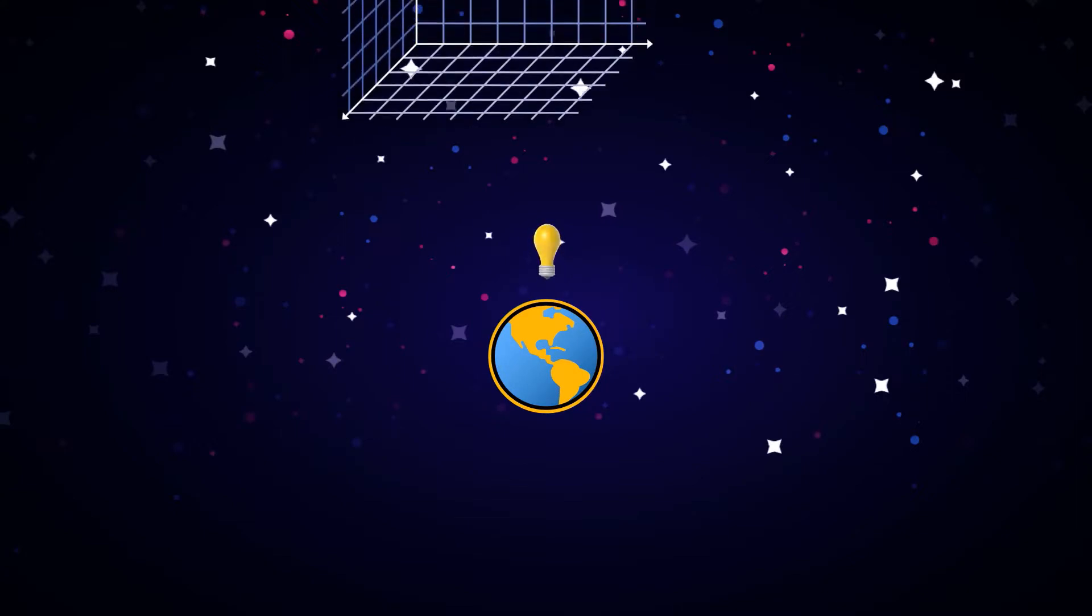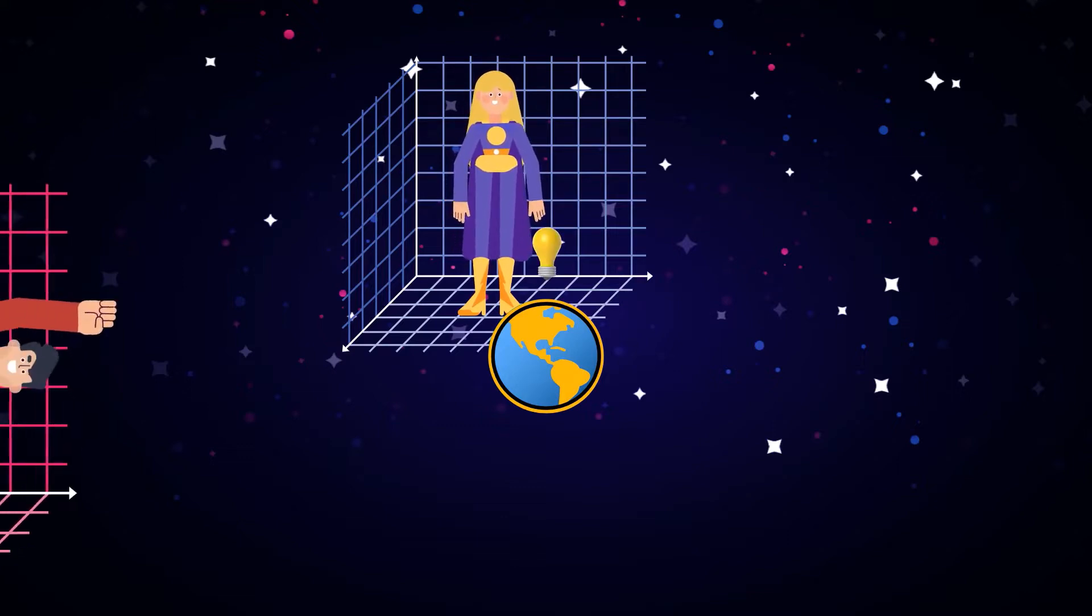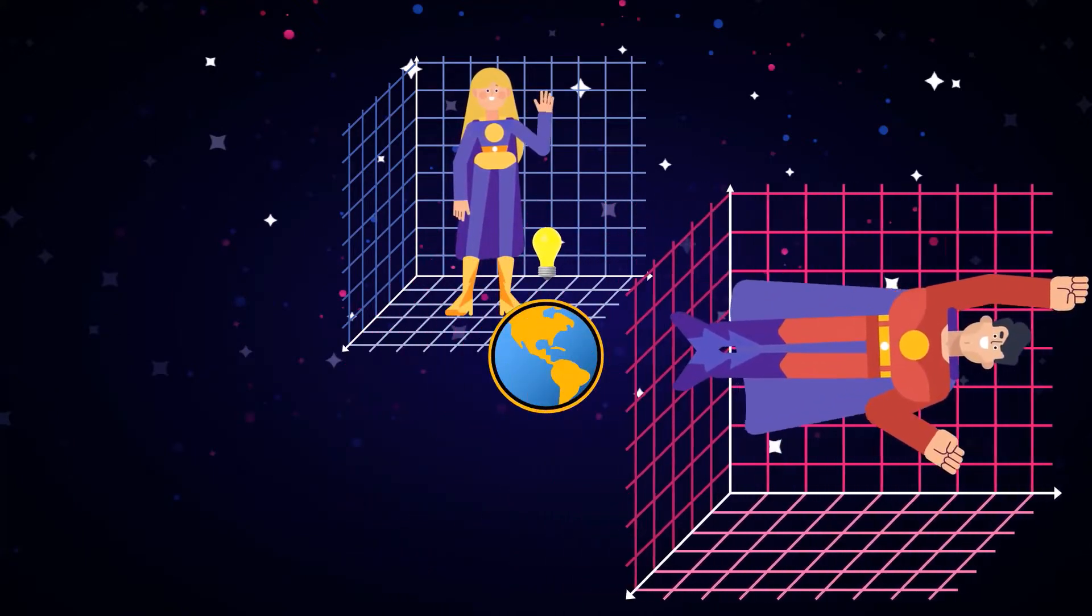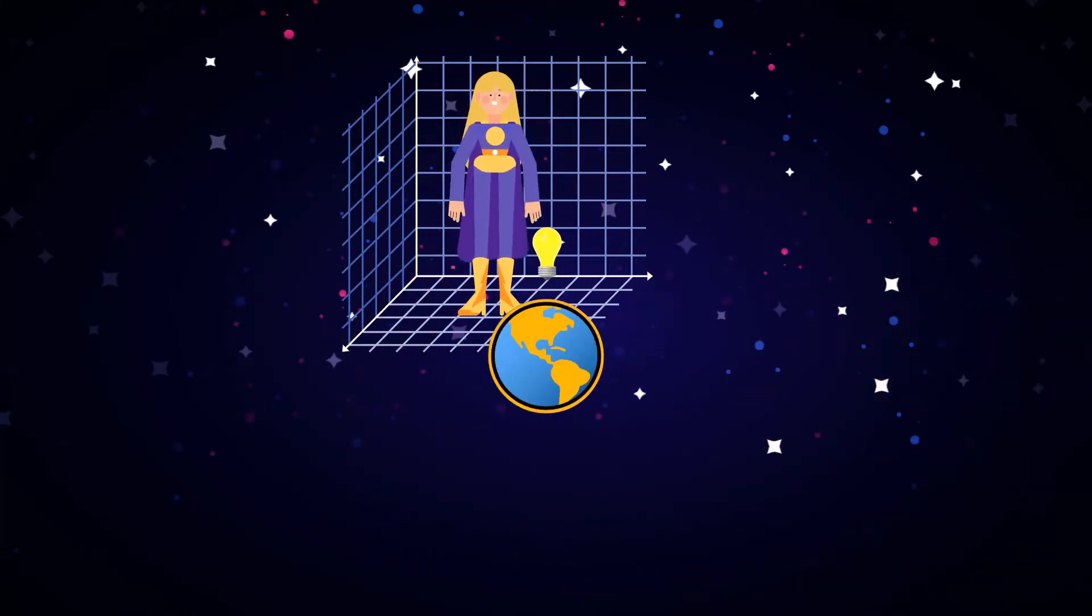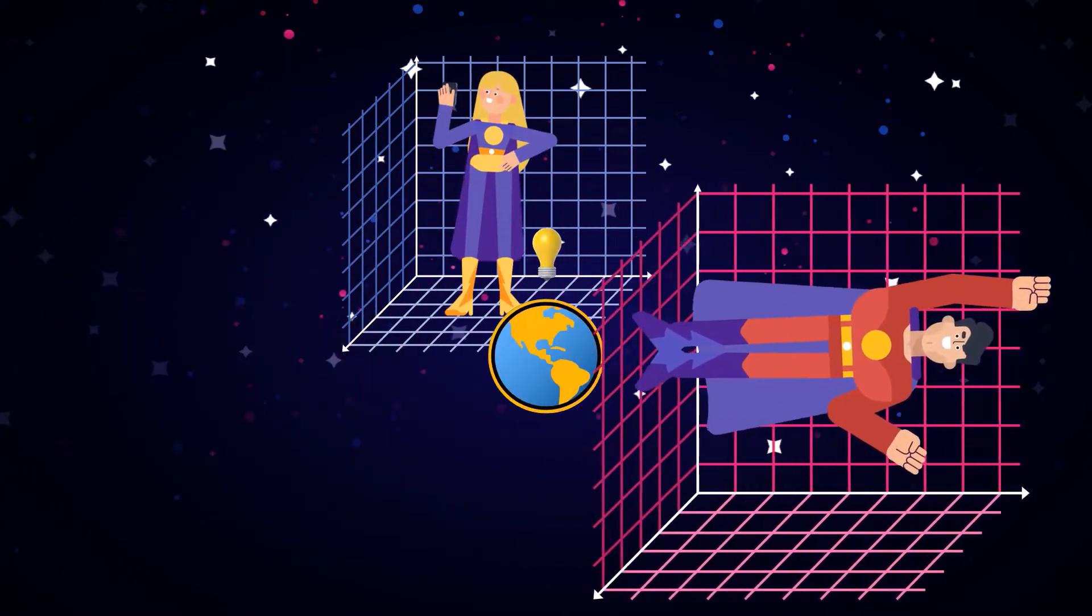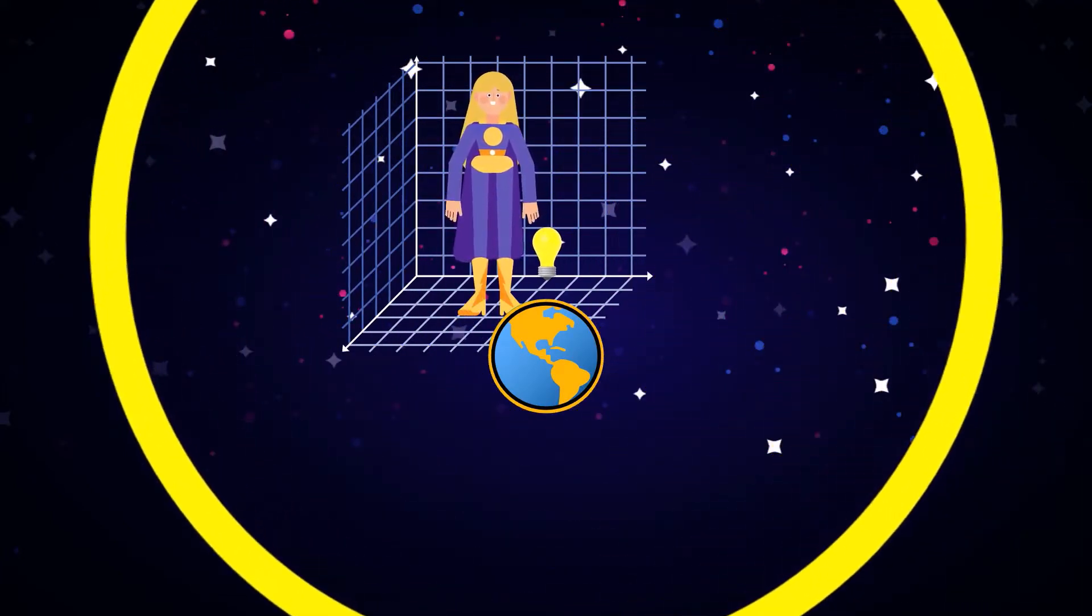So let's set up the scenario. We'll have superhero girl watching events from the earth, and declare this to be our rest frame. Whilst superhero guy flies past at half the speed of light, taking the moving frame with him. The light source will be stationary in the rest frame, but will appear to move to the left in the moving frame. Everyone agrees that superhero girl will see a spherical light wave, but what will superhero guy see?